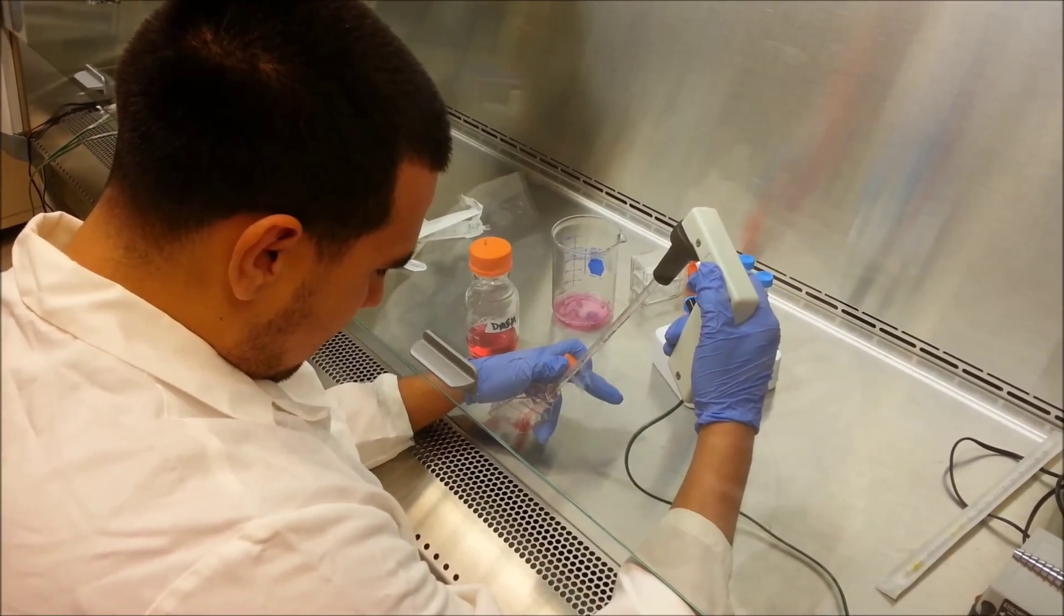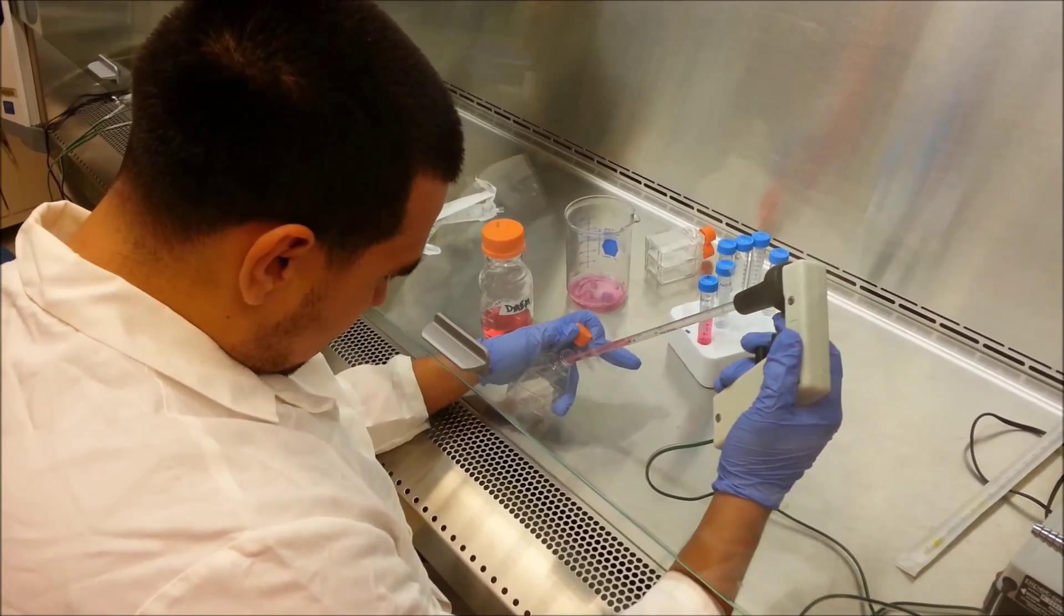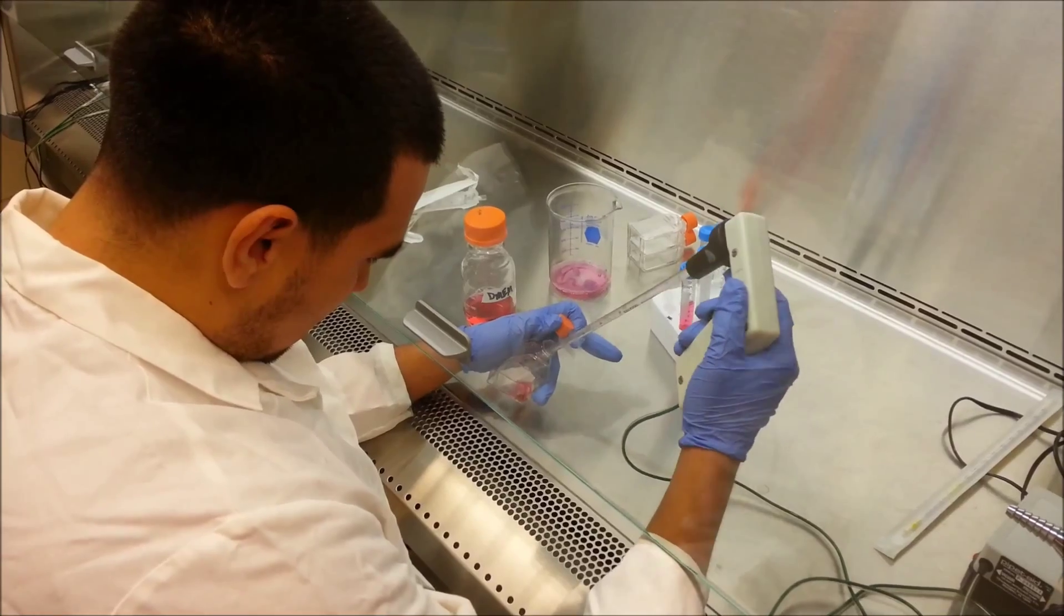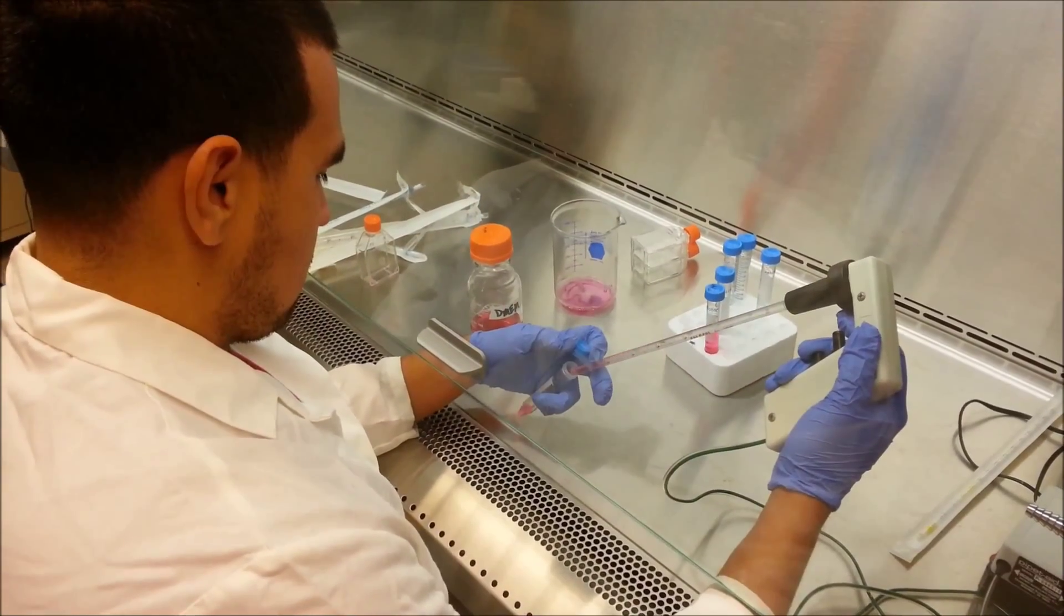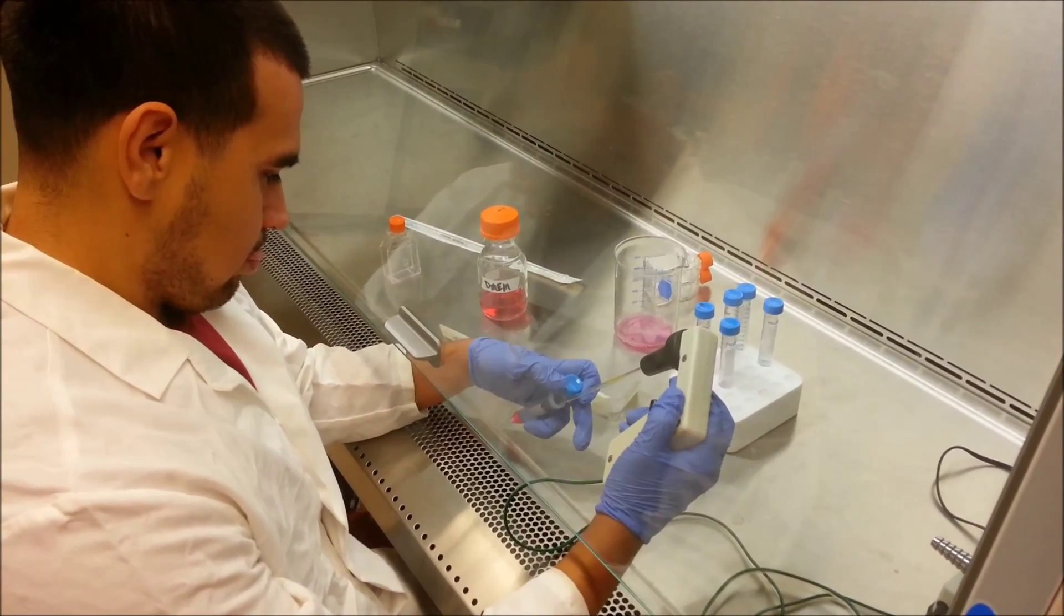Take about 3 to 3.5 mL of fresh media. Wash the cells down from the surface they were adhered to. Transfer them to a 15 mL conical tube and take a portion for cell counting.